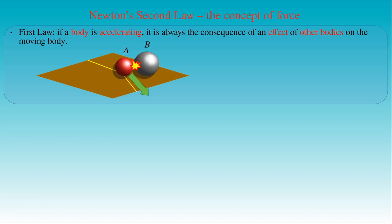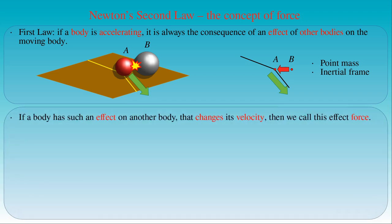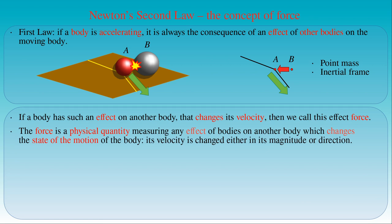In the description of the collision, the moving bodies are approximated with point masses A and B, and their velocities are measured in an inertial frame. If a body has such an effect on another body that changes its velocity, then we call this effect a force acting on the accelerating body. Force is a physical quantity measuring the effect of bodies on a given body, which changes its state of motion. The change in state of motion means the change of velocity of the body — that is, the change in its speed or the direction of its motion.